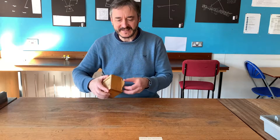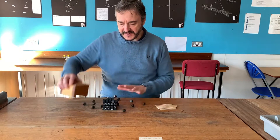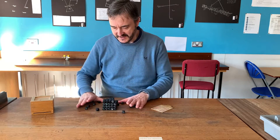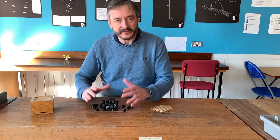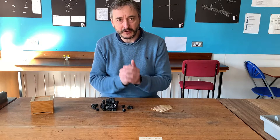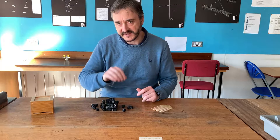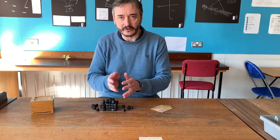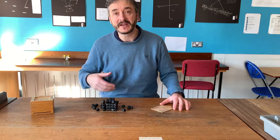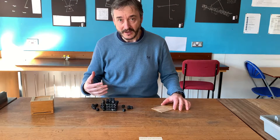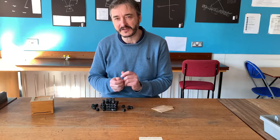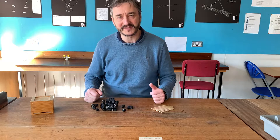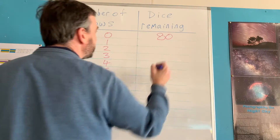In this box I've got 80 dice and I'm going to use these dice to represent the nuclei of unstable atoms. What I'll do is shake the dice and then after I've shaken it I'm going to remove any number sixes. The sixes will represent nuclei that have decayed, so I'll take those to the side, count how many dice I've got remaining, repeat the process, and record all of my results in this table on the board as I go along.